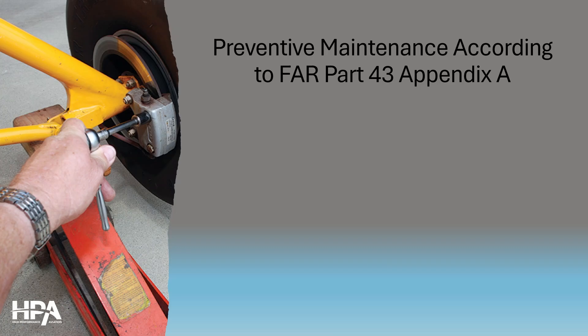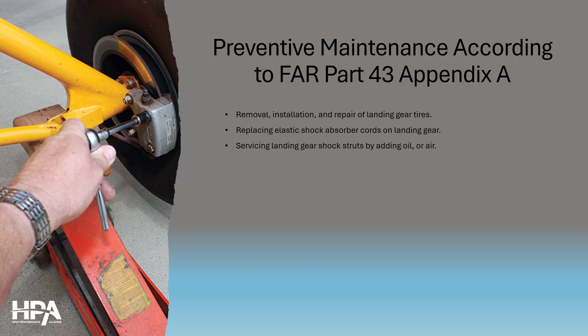If you decide to do something on your airplane, make sure you reference Appendix A of Part 43. The FAA says you can do removal, installation, and repair of landing gear tires. You can replace elastic shock absorber cords on landing gear, service landing gear shock struts by adding oil or air, service landing gear wheel bearings such as cleaning and greasing, and replace defective safety wiring or cotter keys.